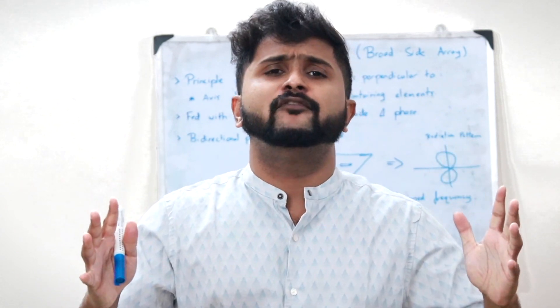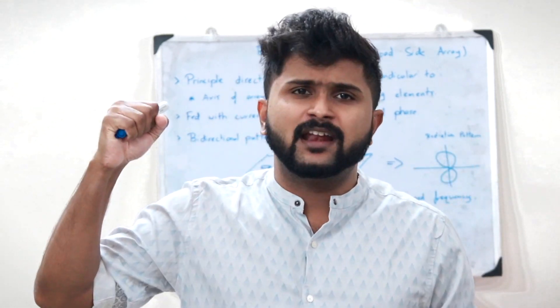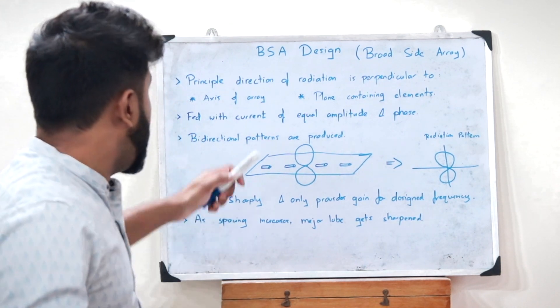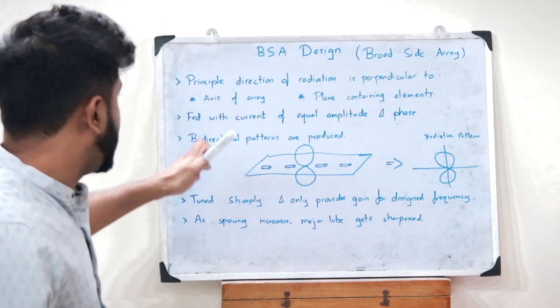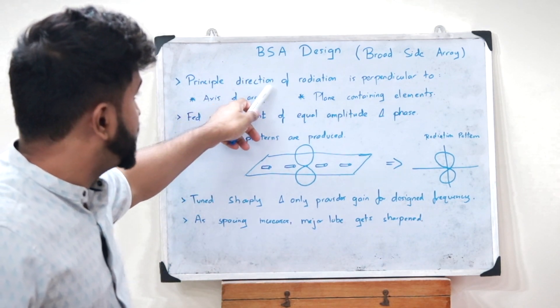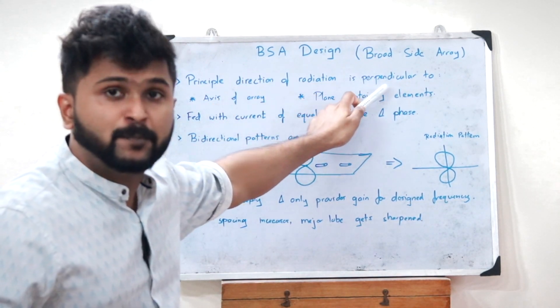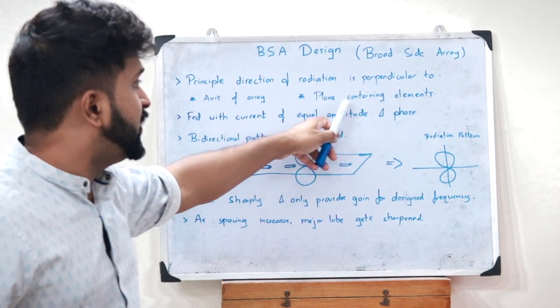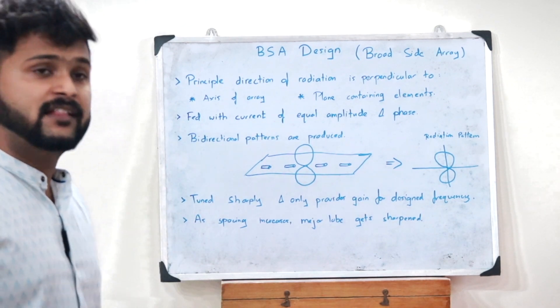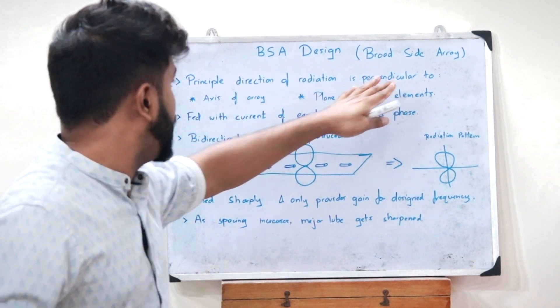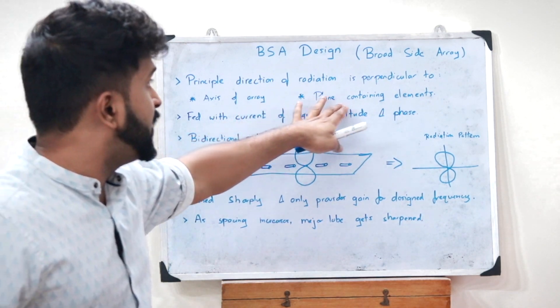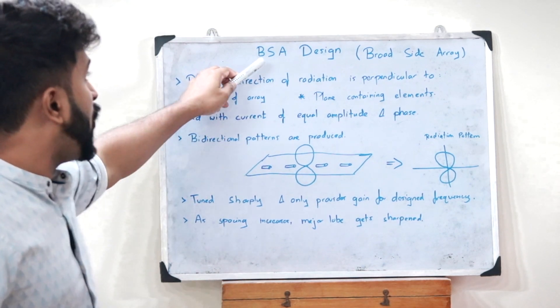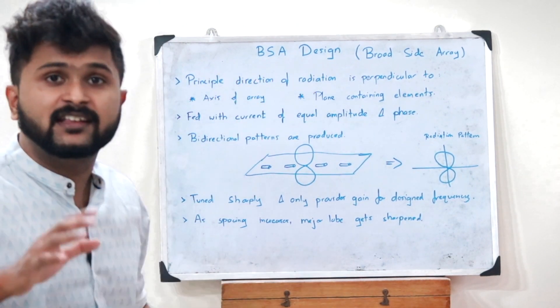So what do you mean by broadside array of antennas? Well let's find out. An array of antennas is said to be a broadside array if its principal direction of radiation is perpendicular to the axis of the array and the plane containing the elements.